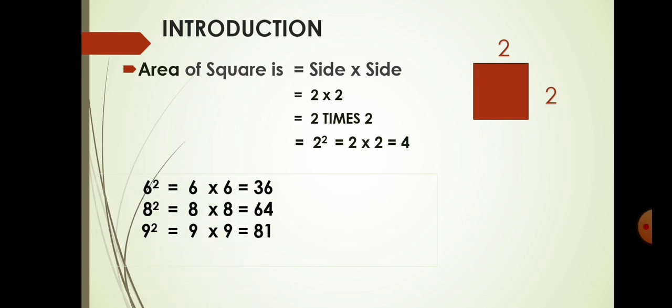Similarly, 6 squared can be written as 6 into 6, that is 36. 8 squared is 8 into 8, that is 64. 9 squared is equal to 9 into 9, that is 81. For other numbers, you can multiply the same number with itself. The number multiplied by itself is the square.